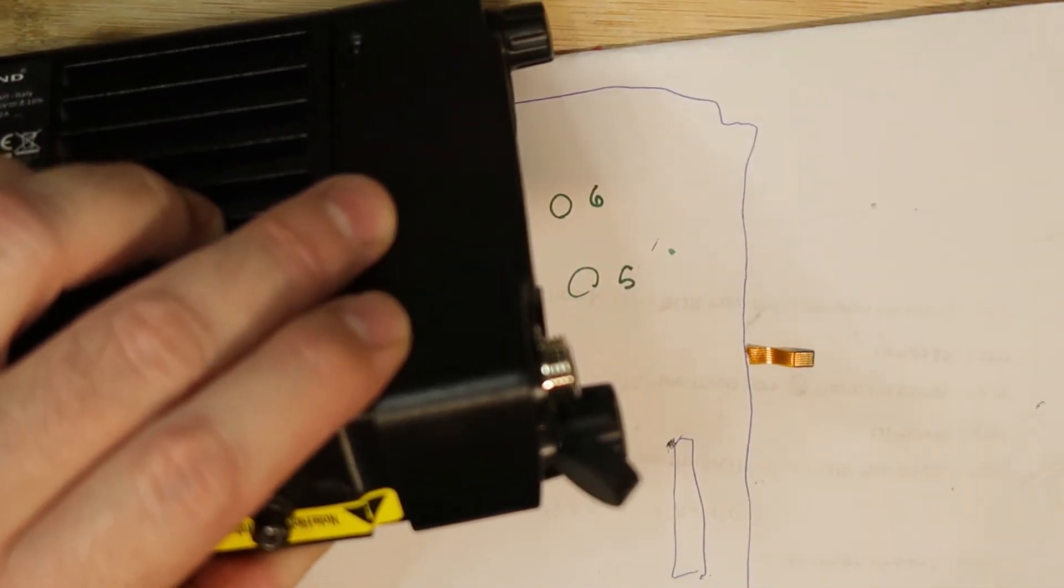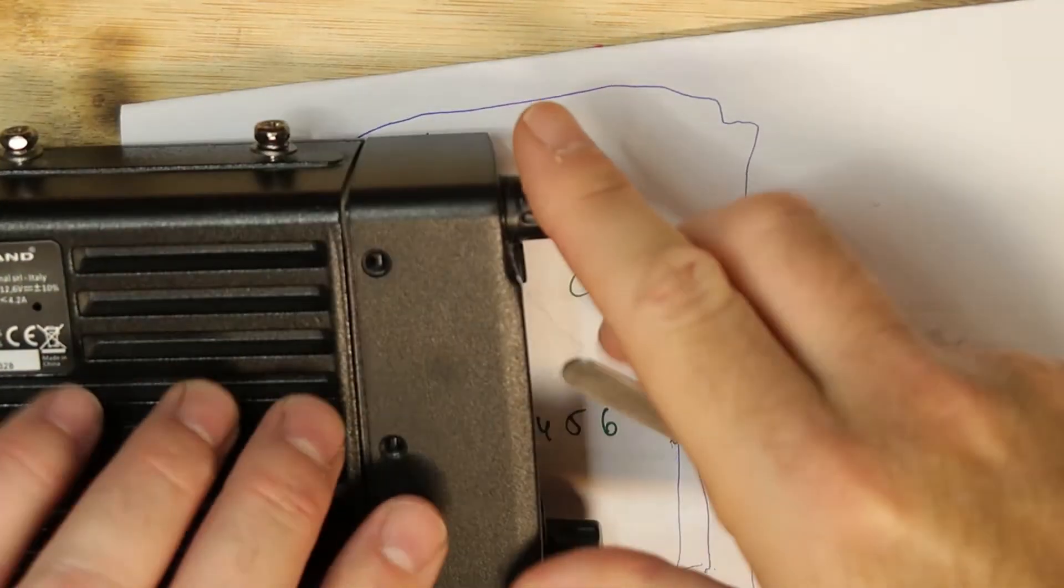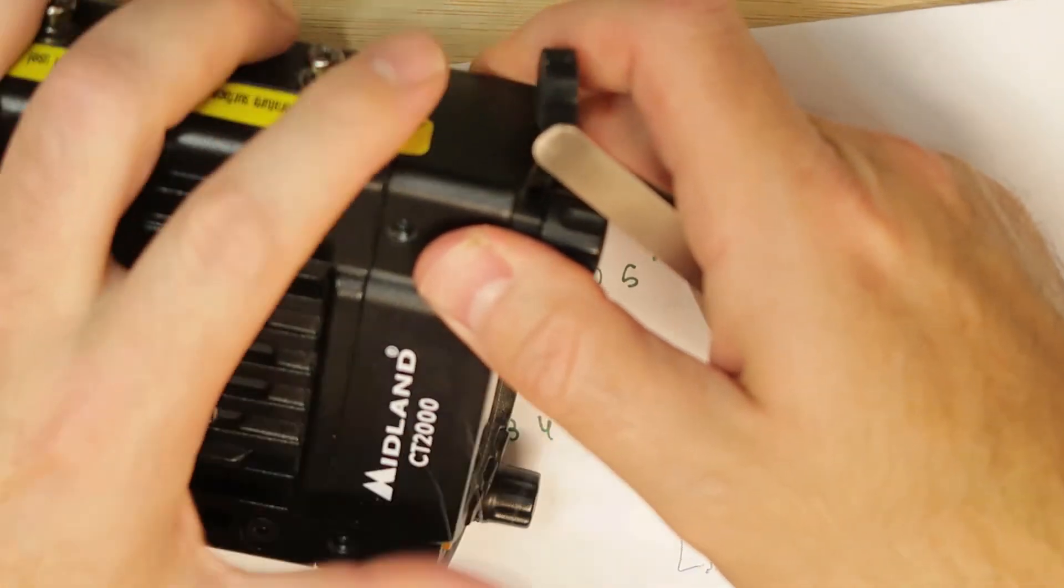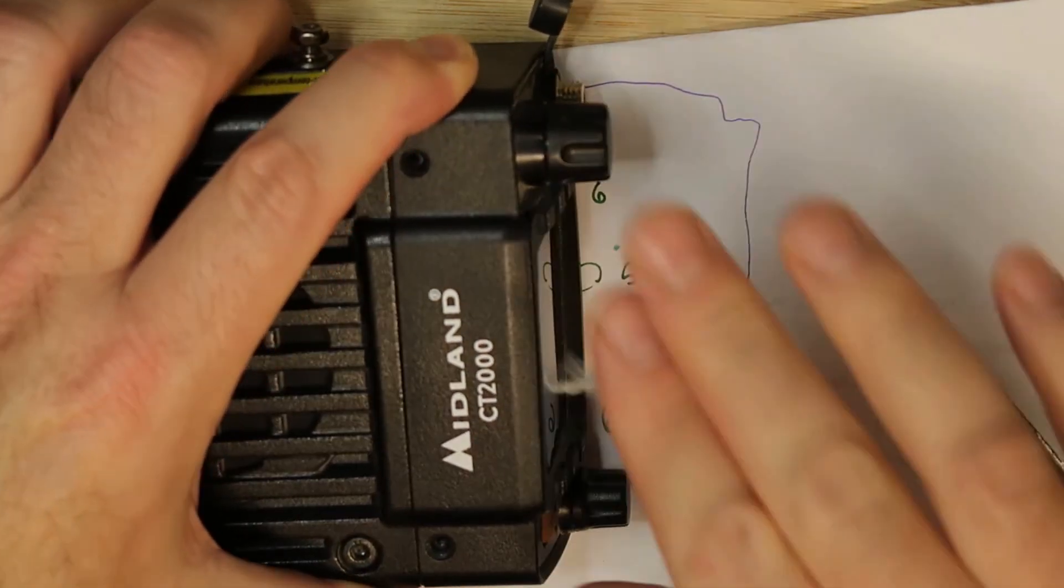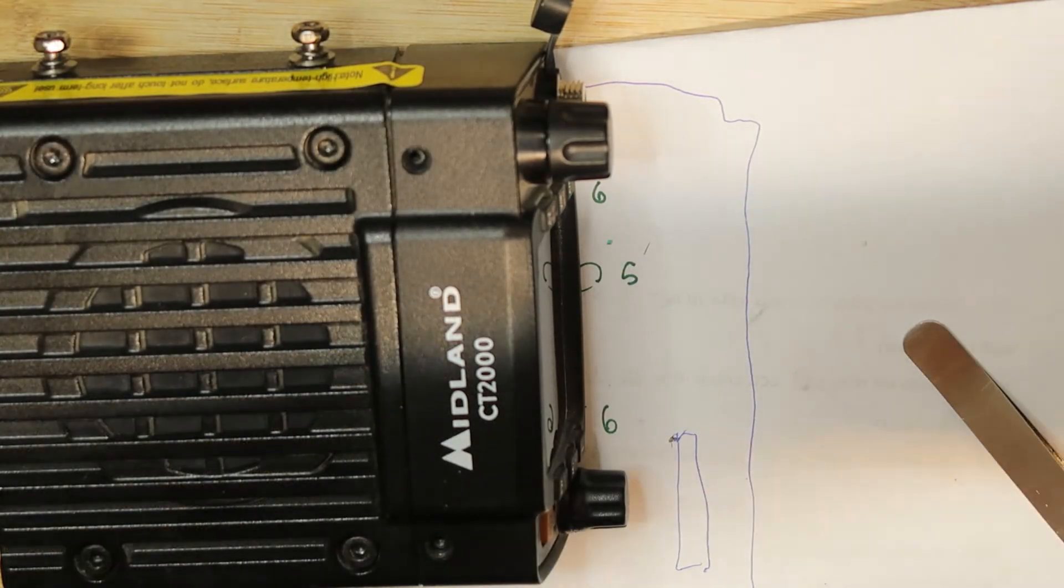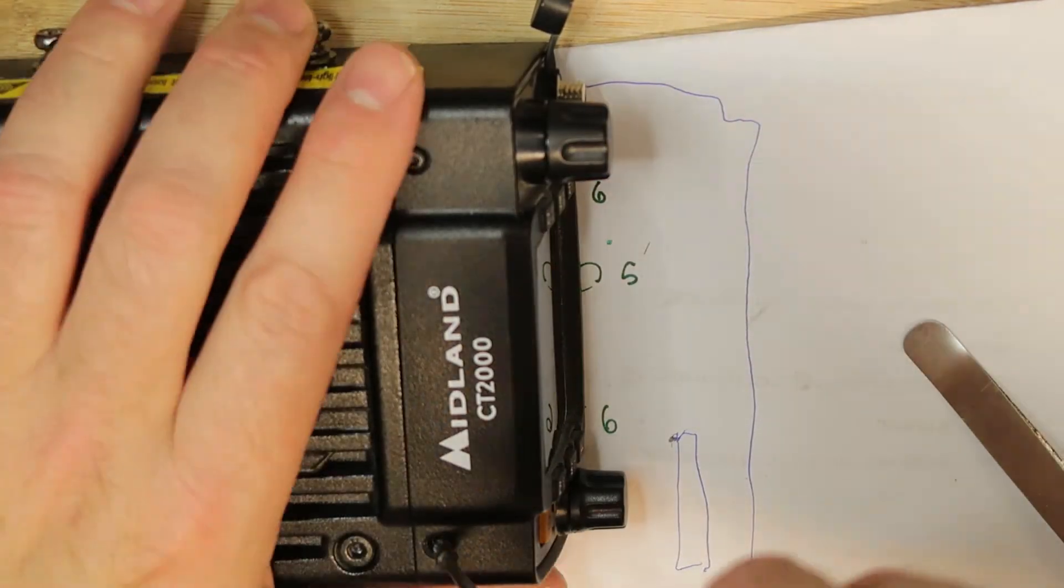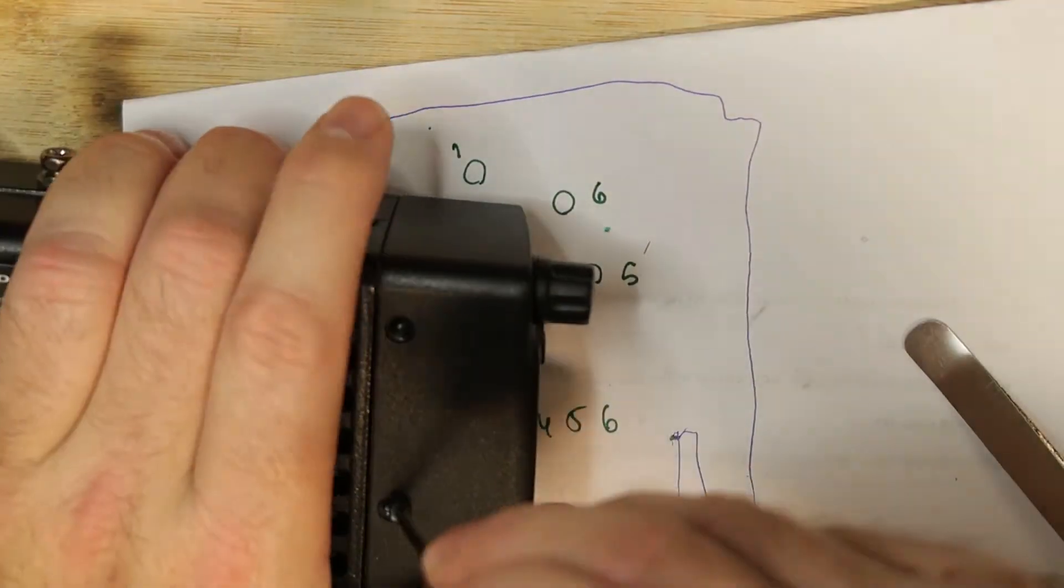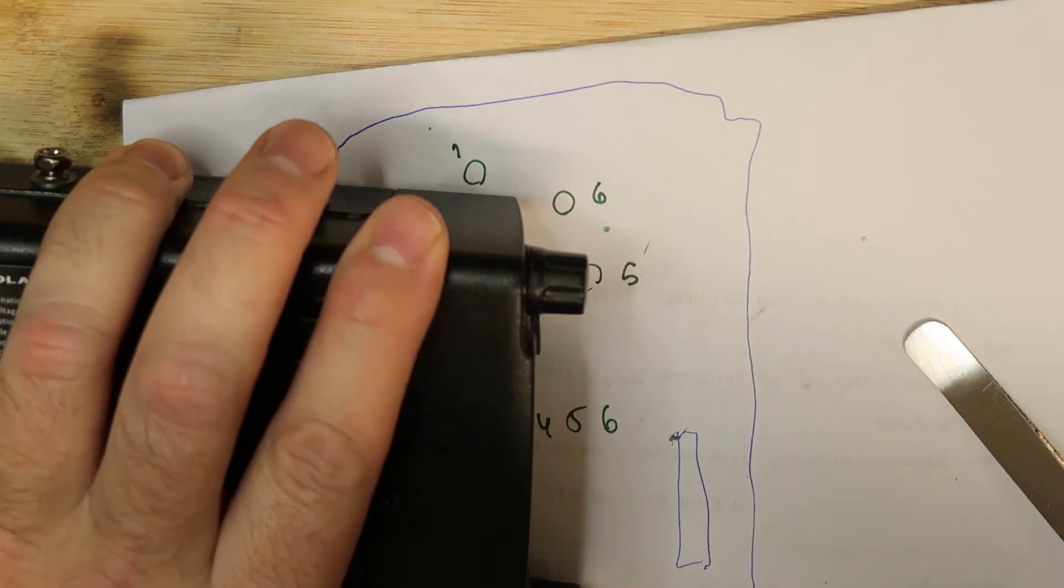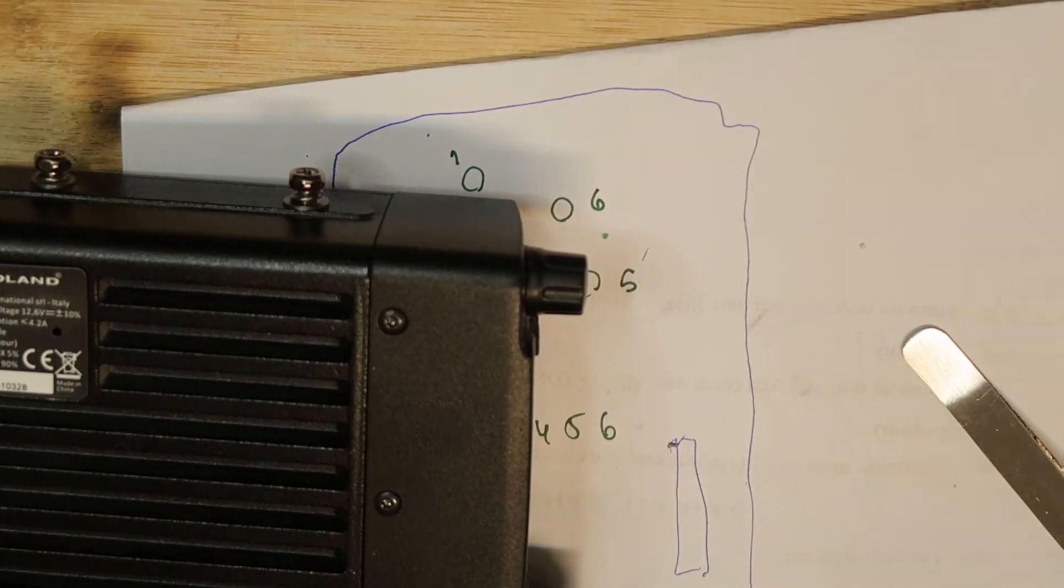Now we have a sticker, 'do not remove, avoid your warranty.' I know that my warranty is already voided. Now I will put all the screws back.